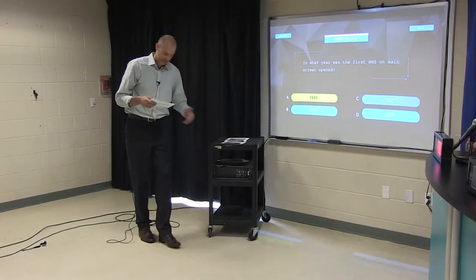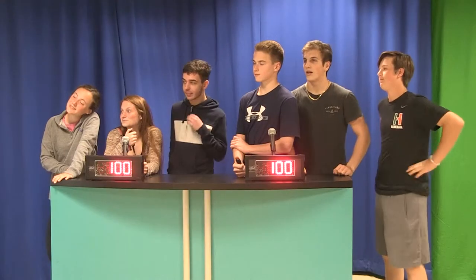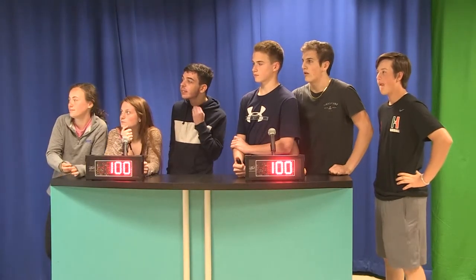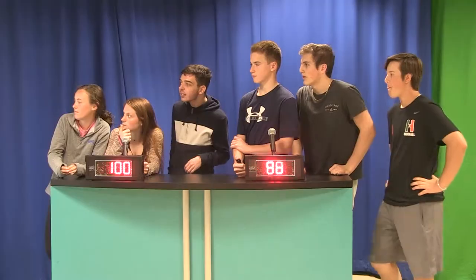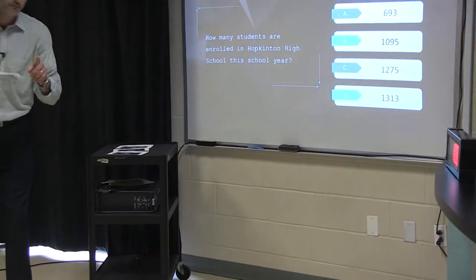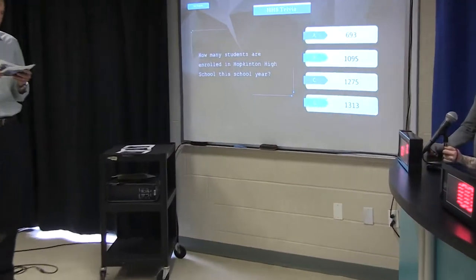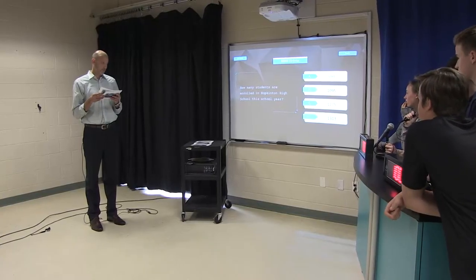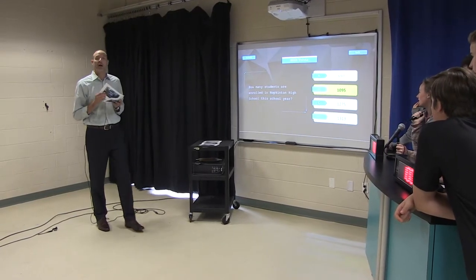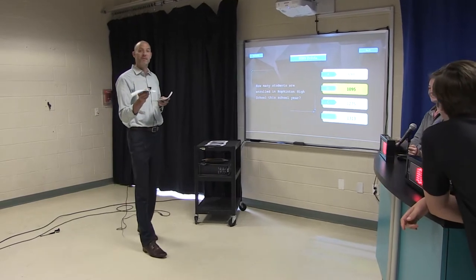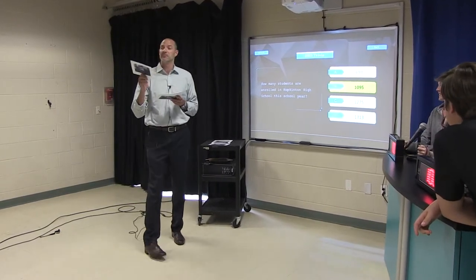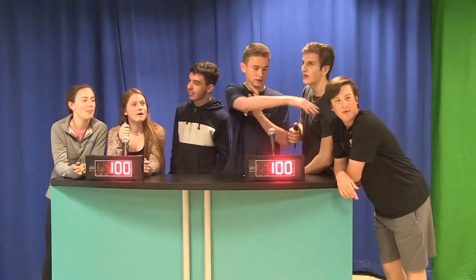Question number four: How many students are enrolled at HHS this school year? This is at the start of the school year. C, 1,275. C is incorrect. Yes? 1,313, that would be D, is that what you're saying? Is incorrect as well. The answer was B and that number is almost up to 1,200 now.